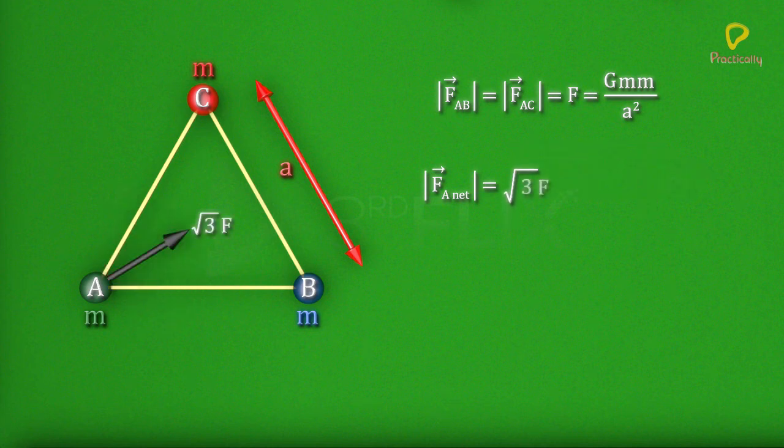Which equals to root 3 f. So the magnitude of the net gravitational force on A is root 3 G m square by a square.